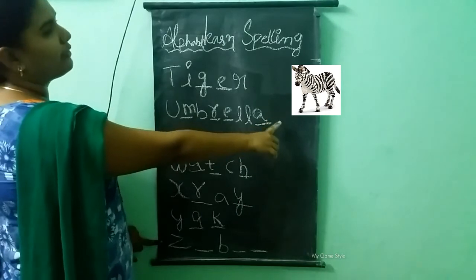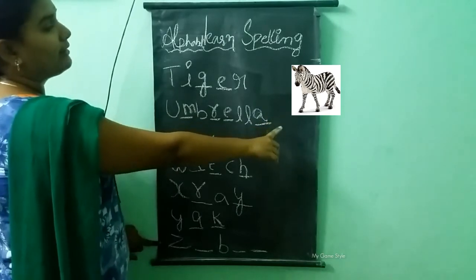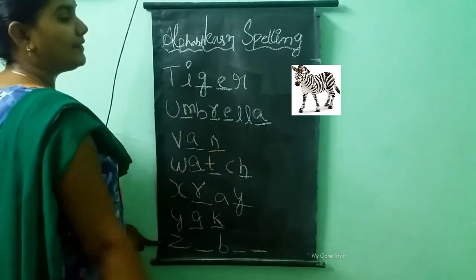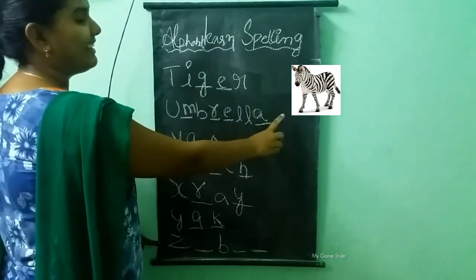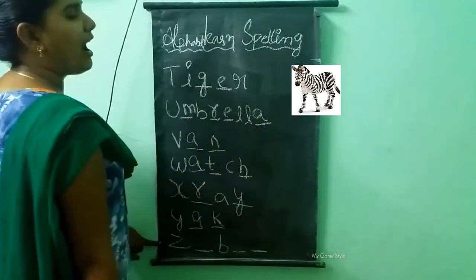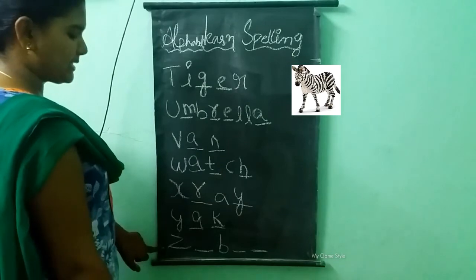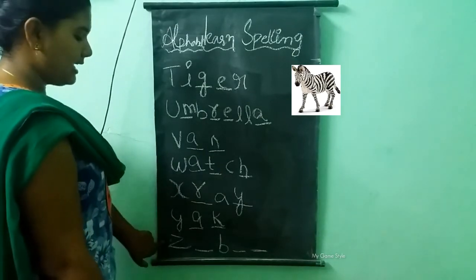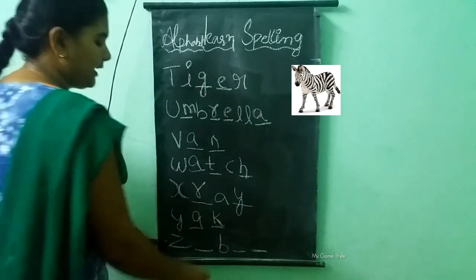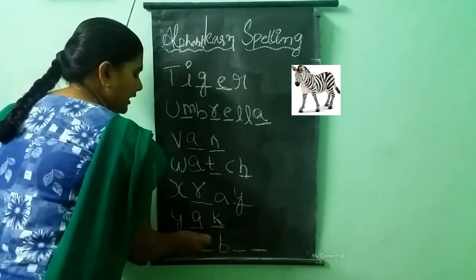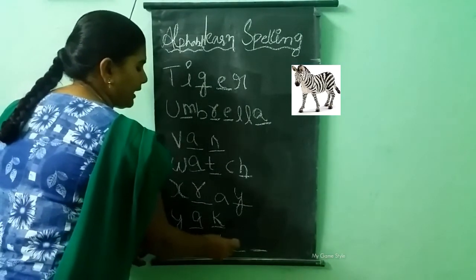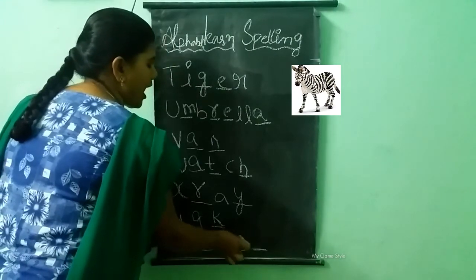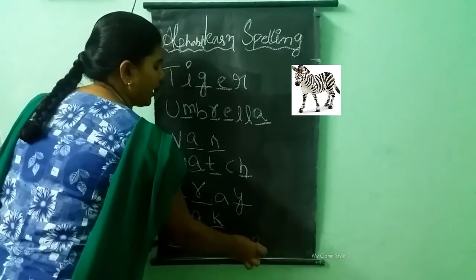What picture is this? This is a zebra. What is the spelling of zebra? Z-E-B-R-A.